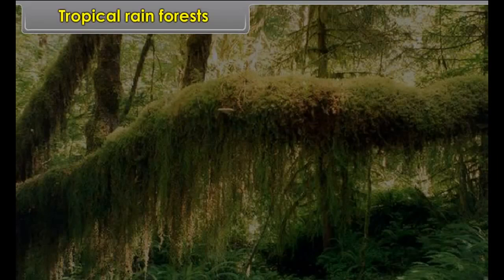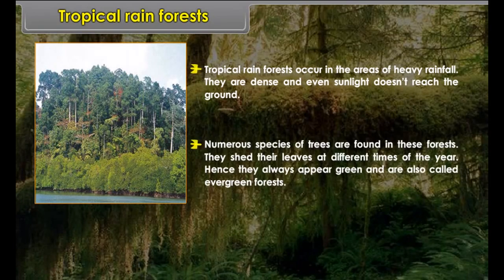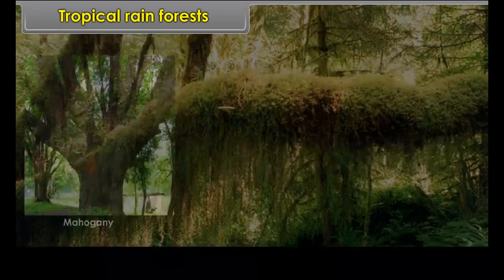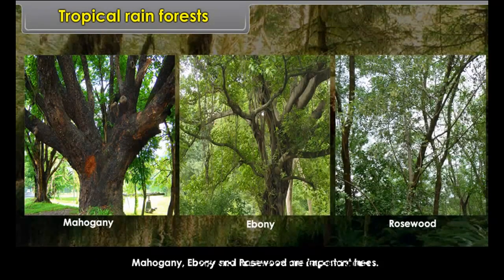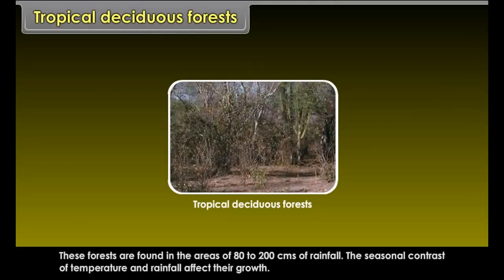Tropical rainforests occur in areas of heavy rainfall. They are dense and even sunlight does not reach the ground. Numerous species of trees are found in these forests; they shed their leaves at different times of the year, so they always appear green and are also called evergreen forests. Mahogany, ebony, and rosewood are important trees. These forests are found in the Andaman and Nicobar Islands, parts of the northeastern states, and a narrow strip of the western slopes of the Western Ghats.